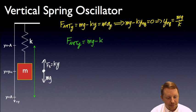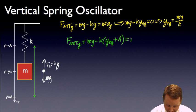That's going to be mg minus, still have the same spring, same spring constant, but now our y is just going to be y equilibrium plus whatever that amplitude is, a. Or, that's mg minus ky equilibrium minus ka if I distribute out the k.